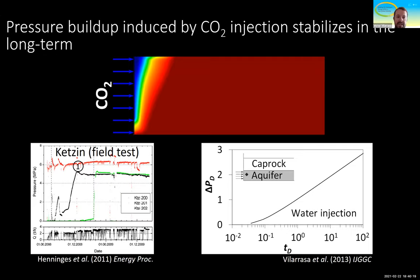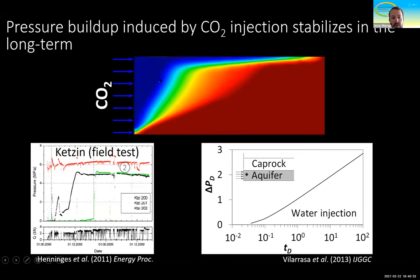This reduced permeability produces a barrier. This is why initially, when we start injecting CO2 — as was the case at Ketzin and many other sites — we see a sharp increase in overpressure. But once the CO2 fills the pores around the injection well, the relative permeability increases towards 1 again.